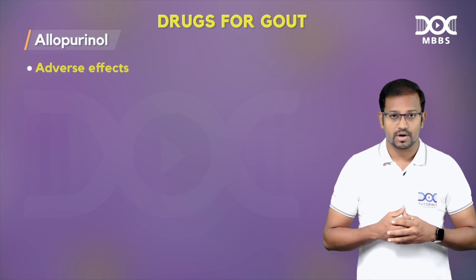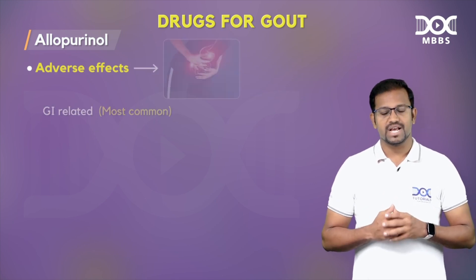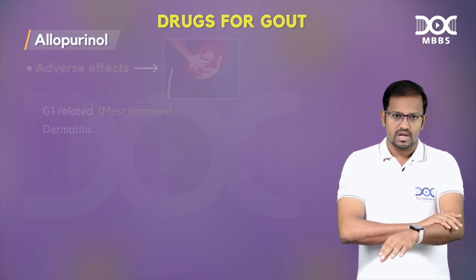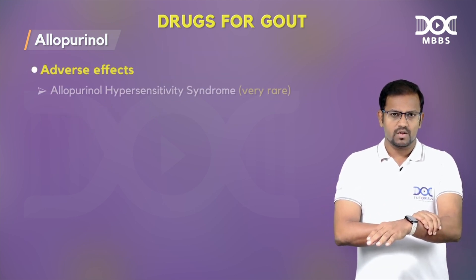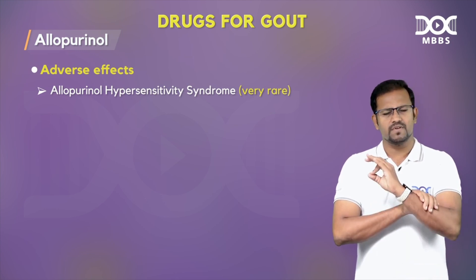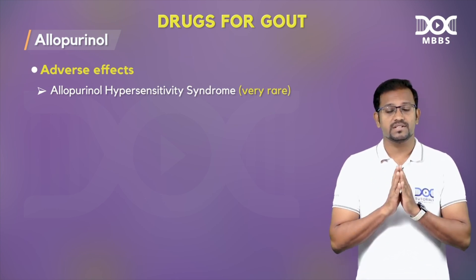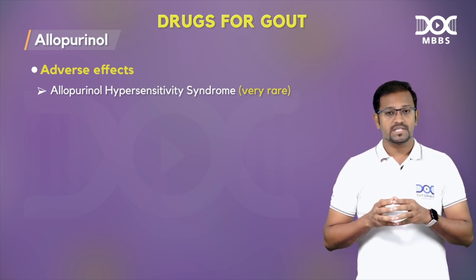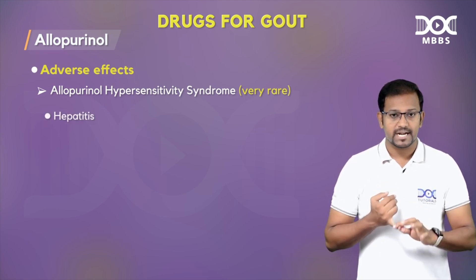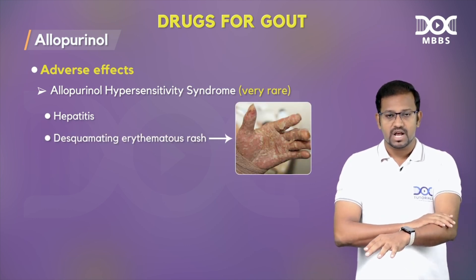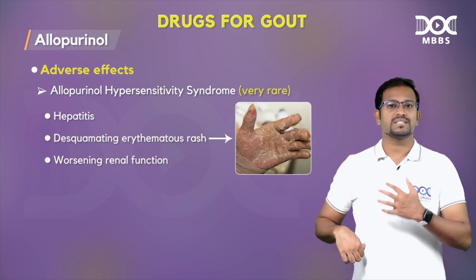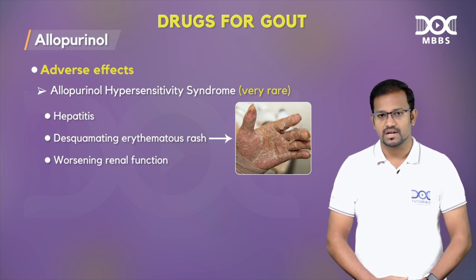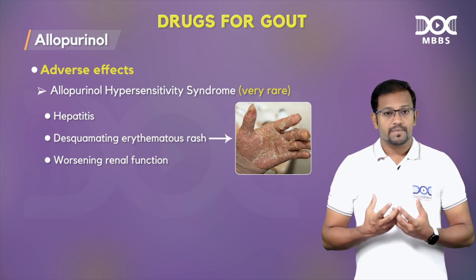The adverse effects of allopurinol: the most common one is GI-related. Some patients might develop dermatitis or skin-related reactions. There is also a separate syndrome called allopurinol hypersensitivity syndrome, which is a very rare adverse effect. It is characterized by hepatitis, desquamating erythematous rash, and worsening renal function — essentially affecting the liver, skin, and kidneys.